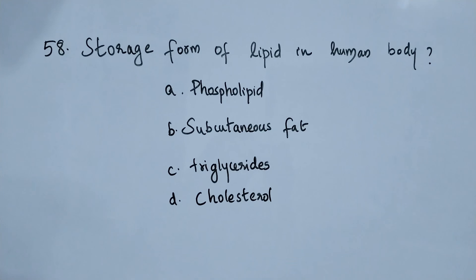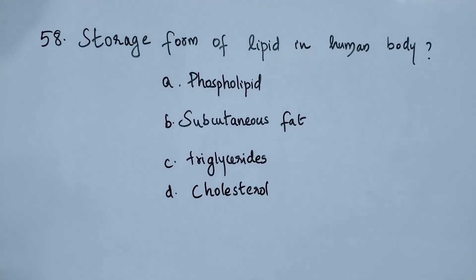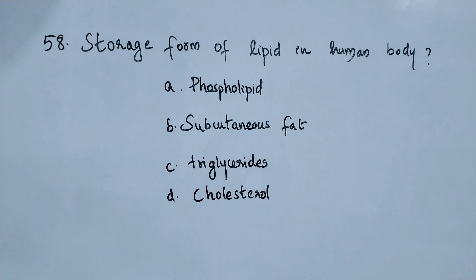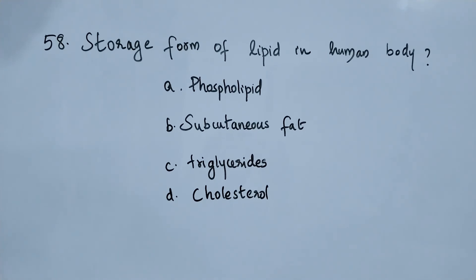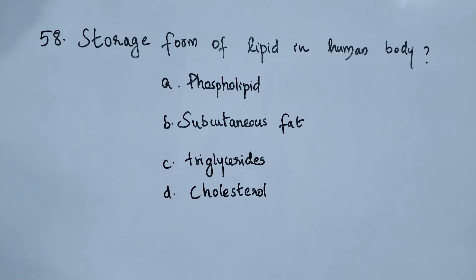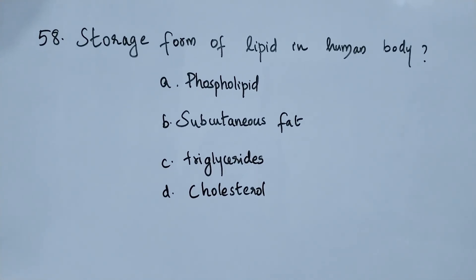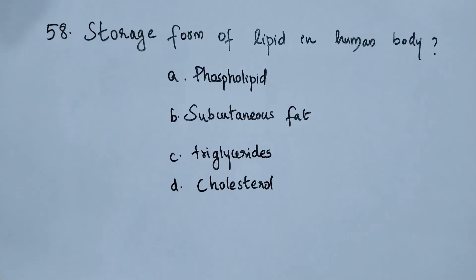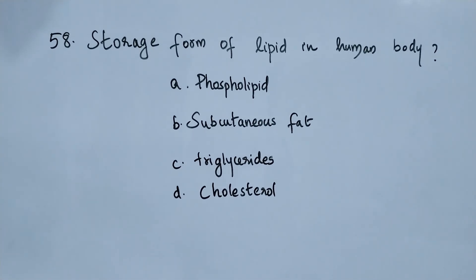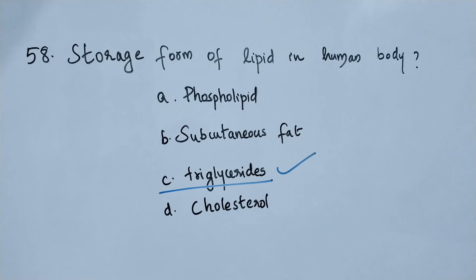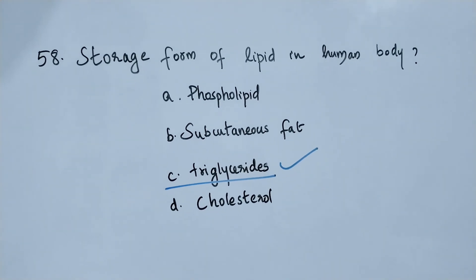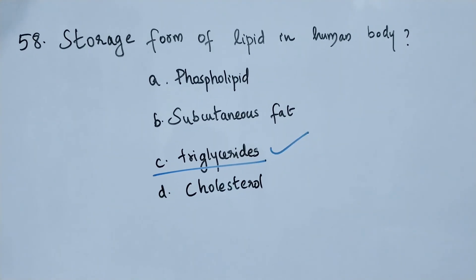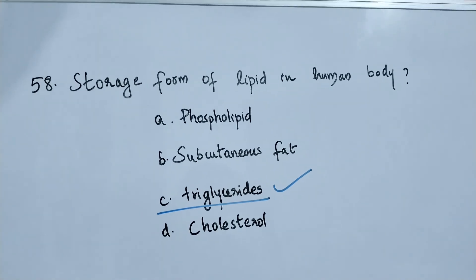Question number 58. Storage form of lipid in the human body: option A phospholipid, option B subcutaneous fat, option C triglycerides, option D cholesterol. The right answer is option C, triglycerides. The storage form of lipid in the human body is triglycerides.